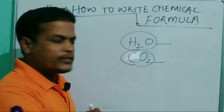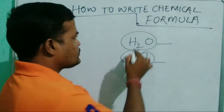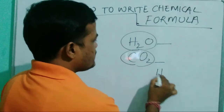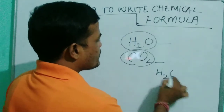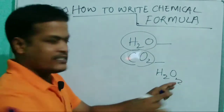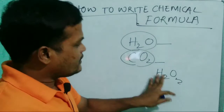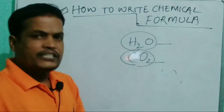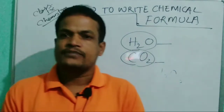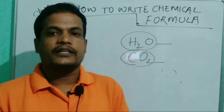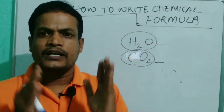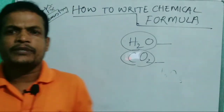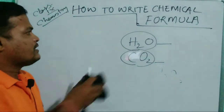So here, why is water not written as 'hydrogen oxide' in that form? There are certain rules and steps that are followed in order to write the chemical formula correctly. Let me write the steps now.